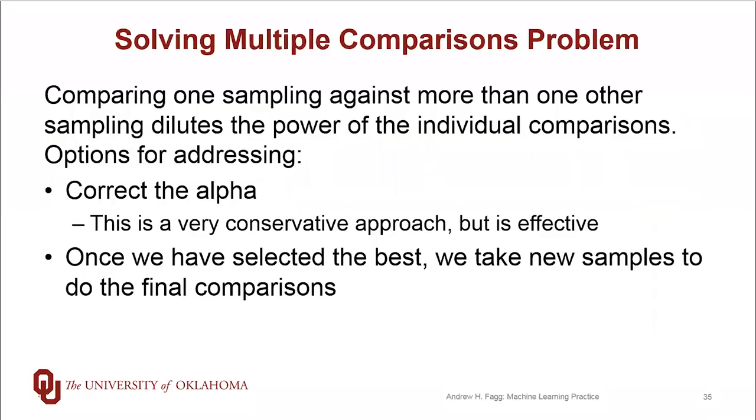So another term for this broker problem or having the multiple sets of hyperparameters is the multiple comparisons problem. And fundamentally, what it's coming from is the fact that we're taking a sample and comparing it against multiple other samples. And when we do this, this dilutes the power of the individual comparisons. And as you can see, it dilutes it pretty substantially. Really our options for addressing this is to correct the alpha in the writing.